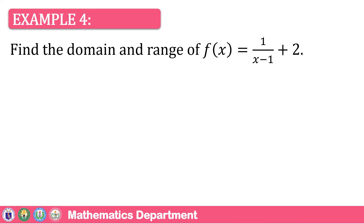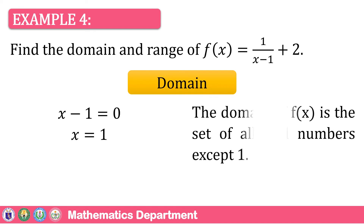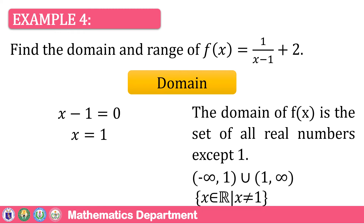Another example: find the domain and range of f(x) = 1/(x − 1) + 2. To find the domain, equate the denominator to 0: x − 1 = 0, therefore x = 1. That is the exemption. Therefore, the domain of f(x) is the set of all real numbers except 1. In interval notation: (−∞, 1) ∪ (1, +∞). In set-builder notation: x is an element of all real numbers such that x ≠ 1.